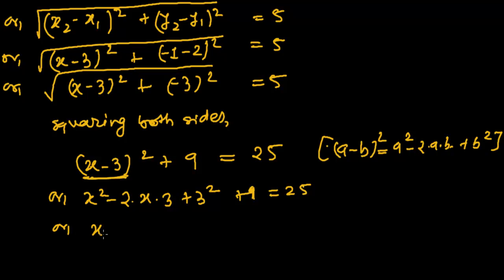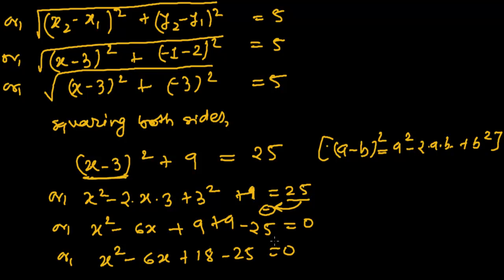So x² - 6x + 9 + 9. And again this 25 will come this side. Here it is positive, therefore here it will be negative. Minus 25 equals to 0. Or we can say x² - 6x, now plus 18 minus 25, plus 18 minus 25 equals to 0.